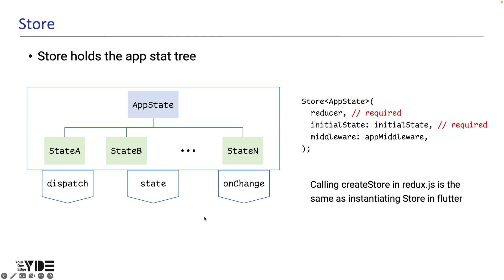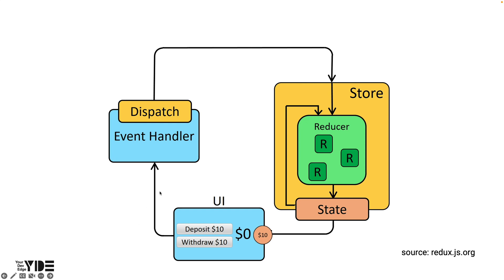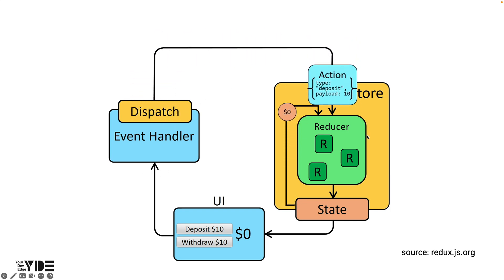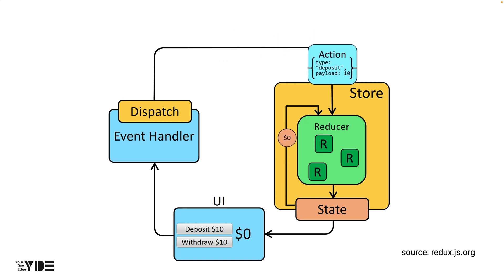In React, the getState function is used to access the state in the store, but in Dart it is accessed using the state getter of the store. This figure is from Redux.js.org. Actions are dispatched in response to user interactions such as button taps. The store executes the reducer function to compute the new state. The UI reads the new state generated by the reducer function to display the new value. You will make several apps, so you will get used to the structure of the Redux app quickly.